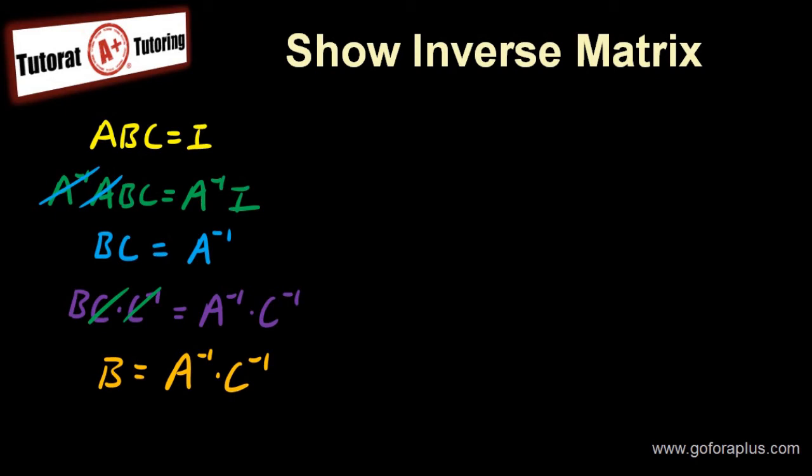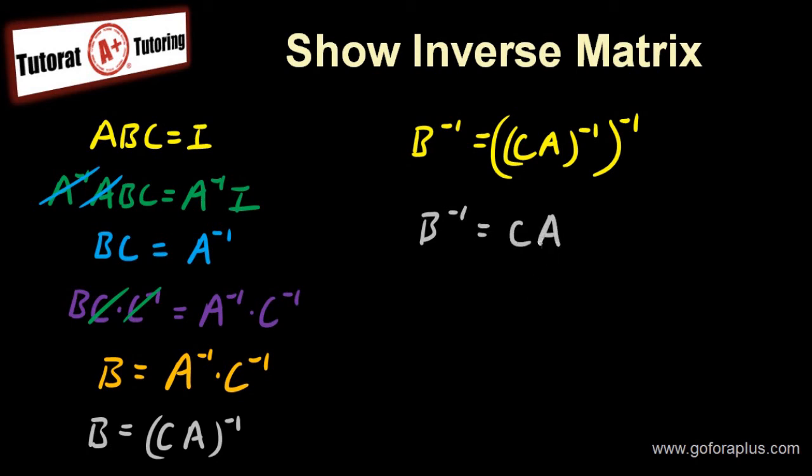So you can actually simplify this by doing so: B equals to C times A inverse. Because I know both A and C, they do have the inverse. So I know that B must exist. And how do I find that B has also an inverse? So let's do this by applying inverse on both sides. Inverse inverse will just cancel out. So B inverse must be equal to CA. And I know that CA is a matrix that exists. So I know that B inverse also exists. Therefore, B inverse exists.